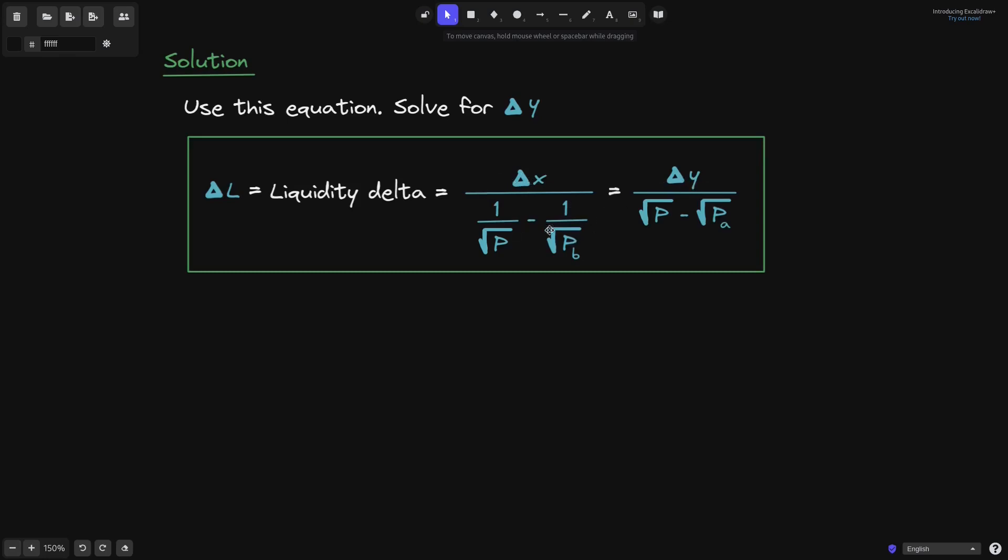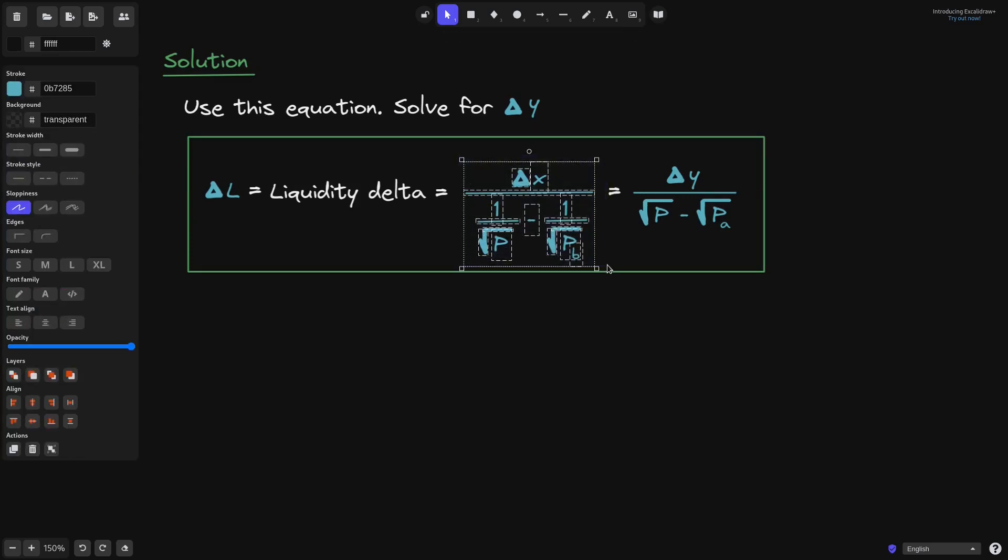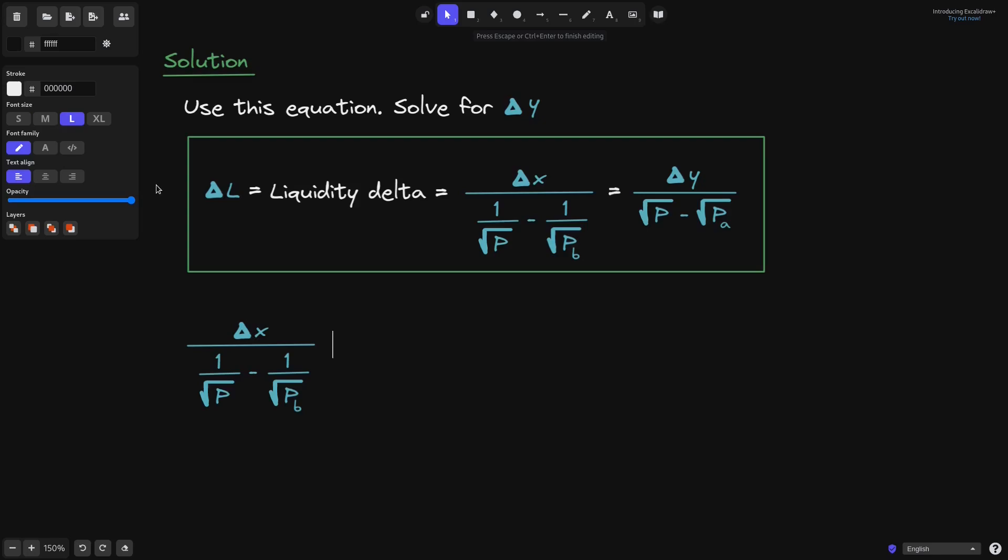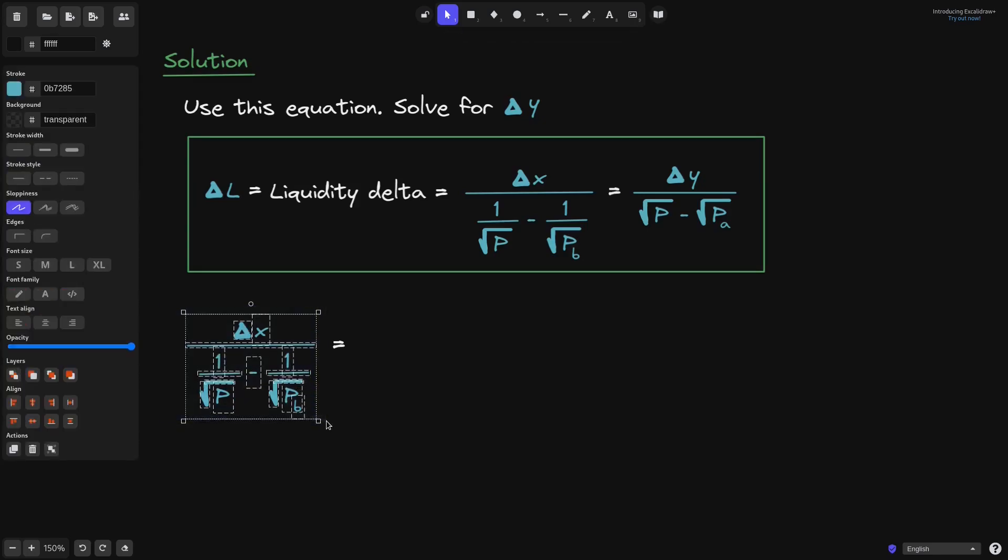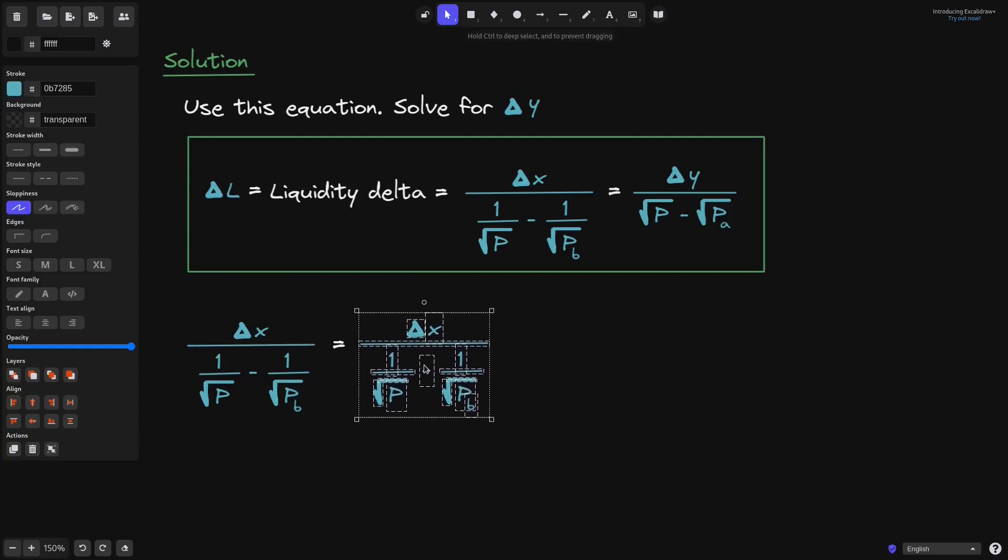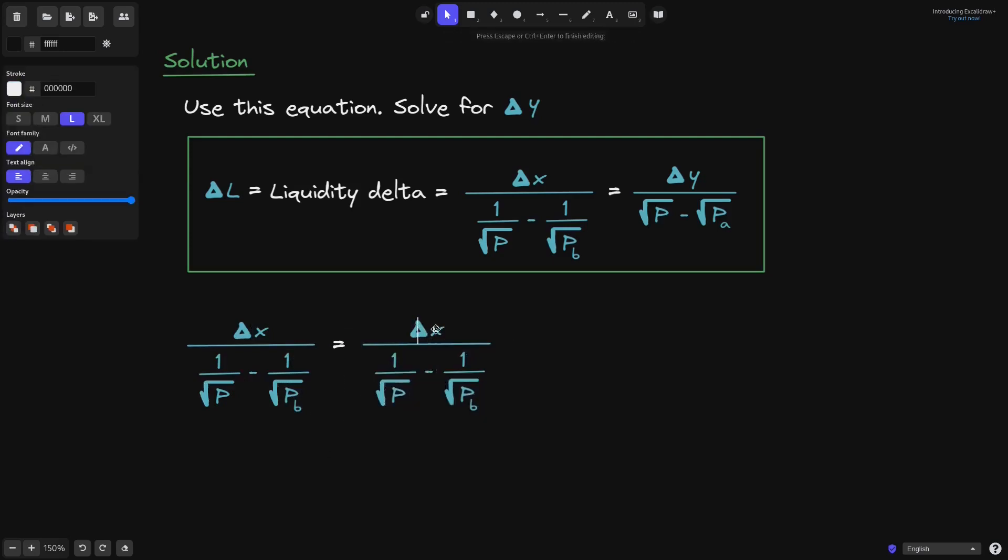So first, let's calculate this part of the equation. I'll copy all of this and then paste it here. And this will be equal to, let's start putting in the numbers. I'll copy this equation. We said that delta X is 2 ETH, so I'll put a 2 over here. And then we said that the current price P is 1,536. We also said that P_B, the upper price range, is 2,000. So I'll put a 2,000 here.